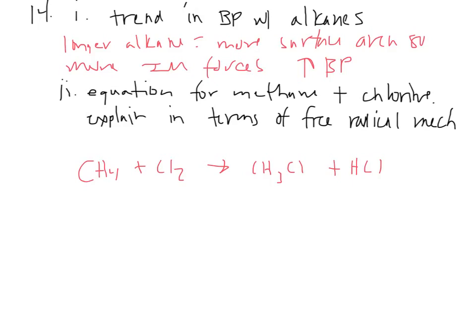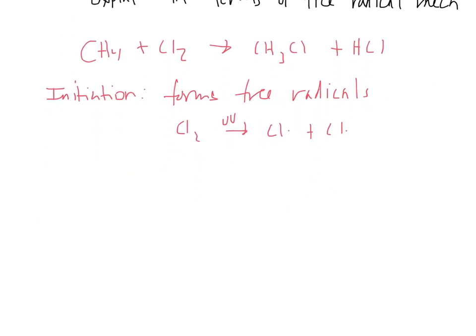So what they expect you to know here is that the initiation forms free radicals. Here's an example, Cl2 with UV light will split and form you two free radicals. You could have written 2Cl with the free radical sign on it. And then the next step is what's called propagation.